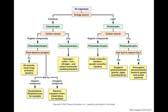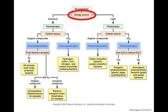This next slide shows how we can use the answers to two simple questions to classify organisms into one of four basic groups: chemoheterotrophs, chemoautotrophs, photoheterotrophs, or photoautotrophs. The first question is: how does the organism get its energy? The organism either gets its energy from an external chemical source, like ingesting food, making it a chemotroph, or it makes its own energy using light from the sun, making it a phototroph.